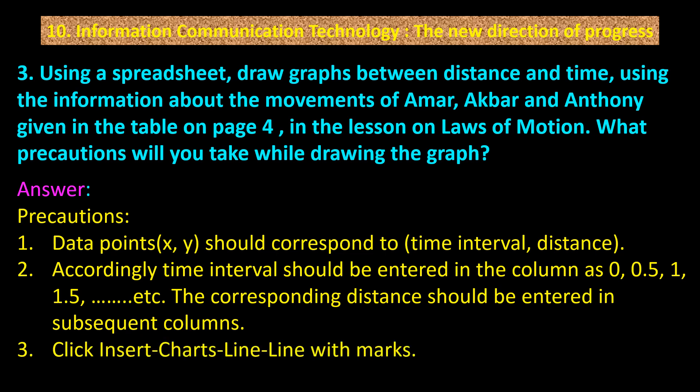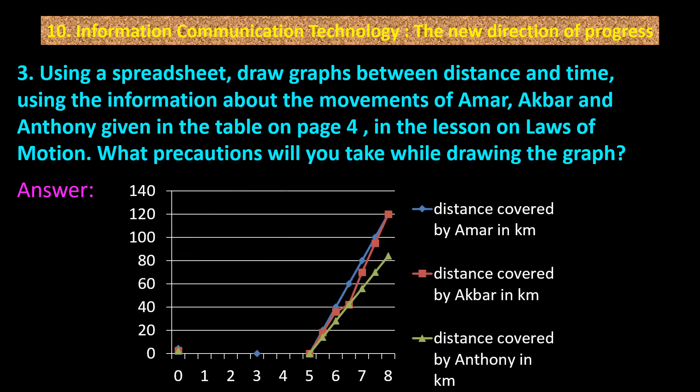Point 3 — click Insert, Charts, Line, Line with Marks. The vertical axis shows values 0, 20, 40, 60, 80, 100, 120, 140 and the horizontal axis shows 0 through 8. The blue line indicates distance covered by Amal in kilometres, the red line indicates distance covered by Akbar in kilometres, and the green line indicates distance covered by Anthony in kilometres.